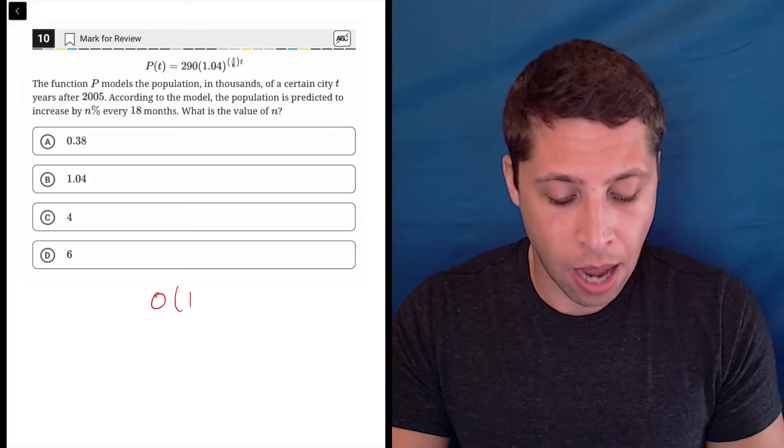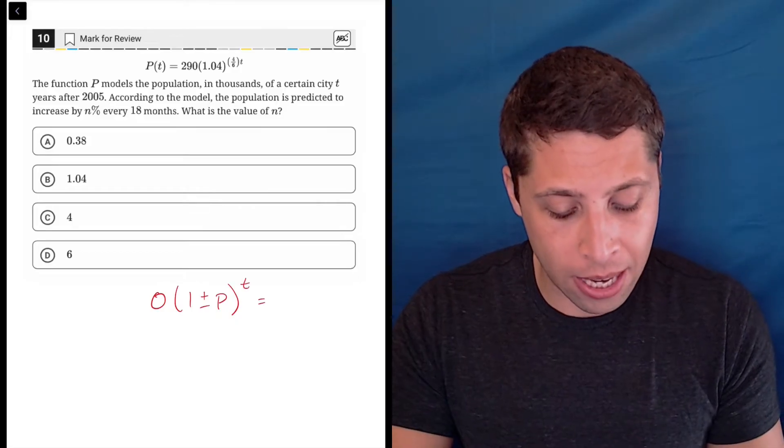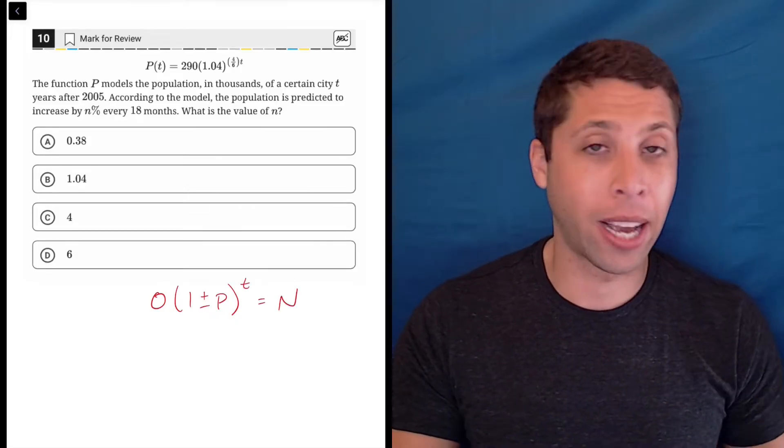The original amount times one plus or minus the P, so that's the percent change, to the T is equal to the new amount. It kind of looks like the word open.